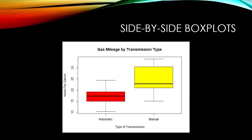If there is no relationship of transmission type to gas mileage, we should see approximately the same distribution of gas mileages for both automatic and manual transmissions. This would mean that transmission type makes no difference in gas mileage, so transmission type and gas mileage would not be related.